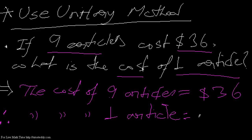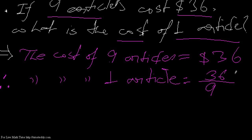I have to divide 36 by 9. 36 divided by 9 is 4, because if I cancel out the numerator and the denominator - both are divisible by 9 - 4 nines are 36. I get 4 in the answer. My answer is $4 is the cost of one article.